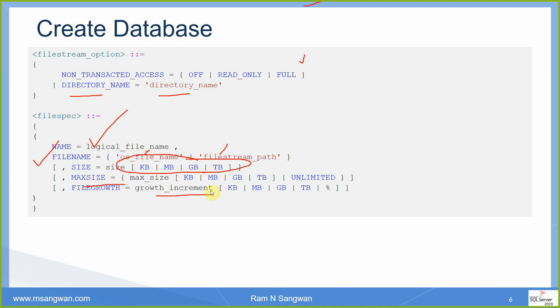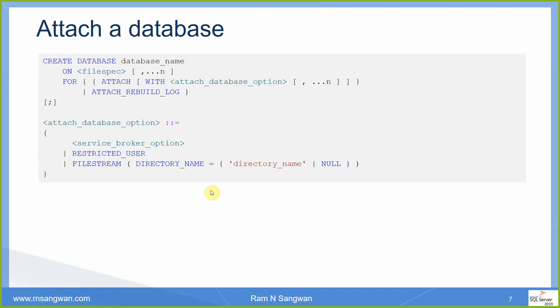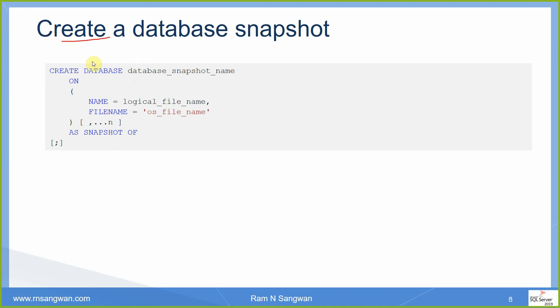Think of the graphical interface popup window where we created the database — all these features were available there, and the same script could have been generated from that. When creating a database from a detached database, you use: CREATE DATABASE database_name ON location FOR ATTACH. You can also create a snapshot: CREATE DATABASE snapshot_name ON with the logical name and physical file AS SNAPSHOT OF the source database.